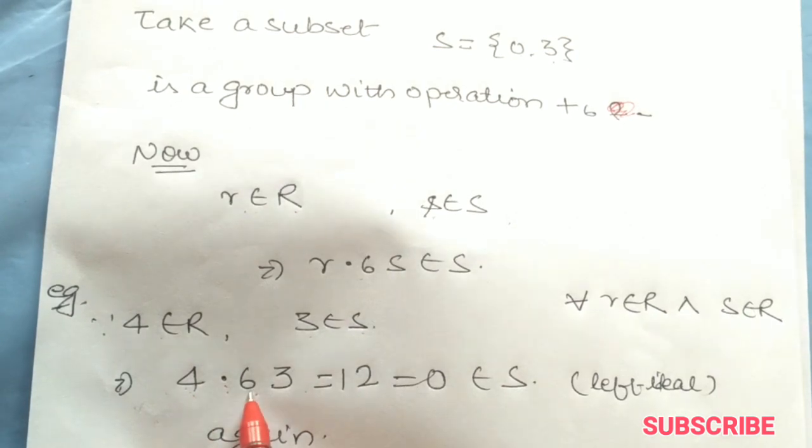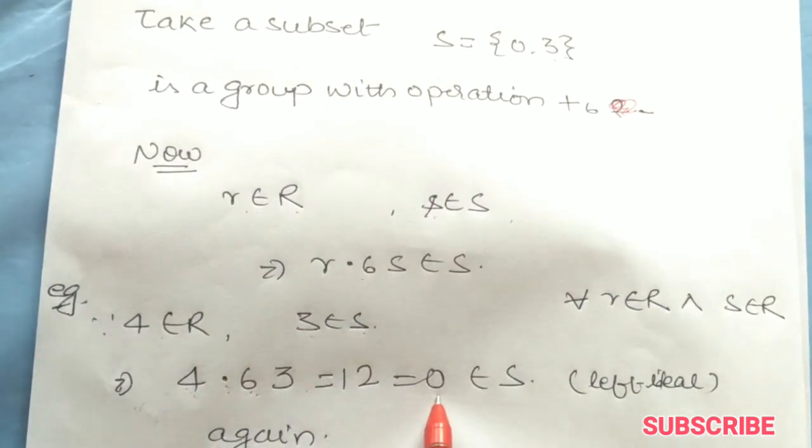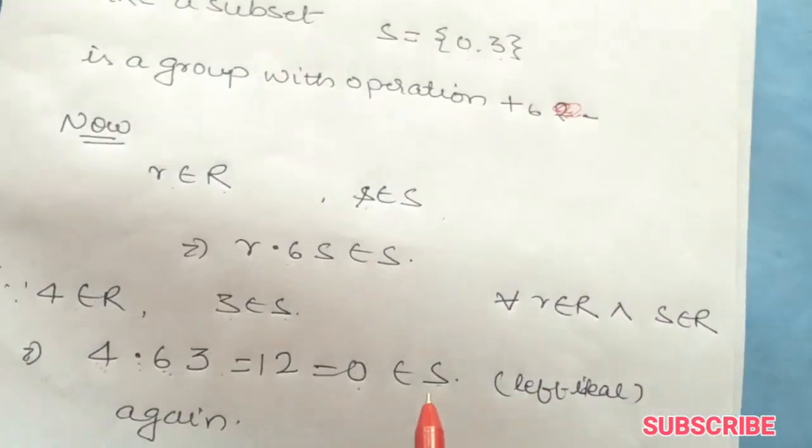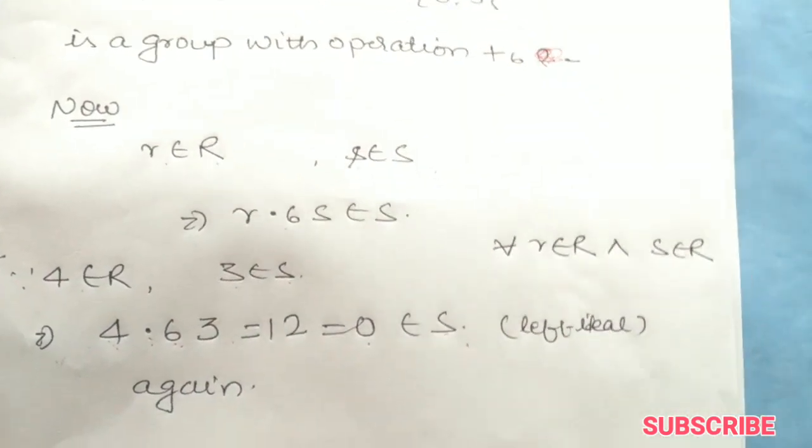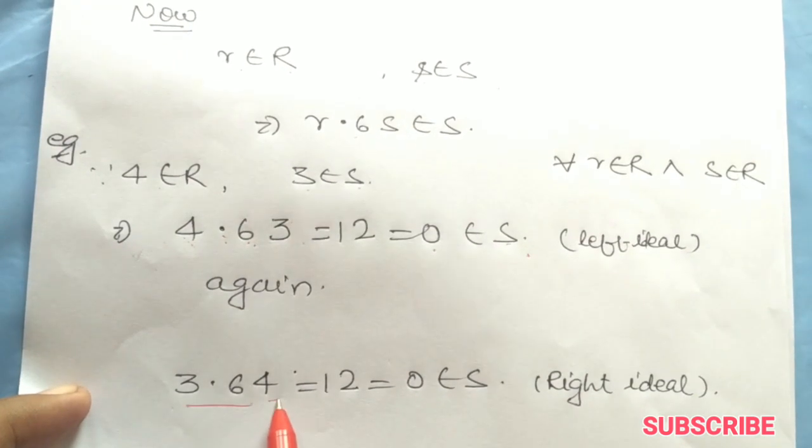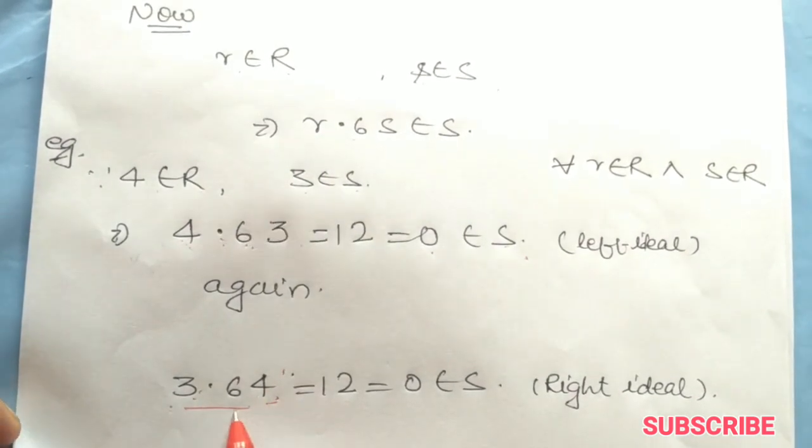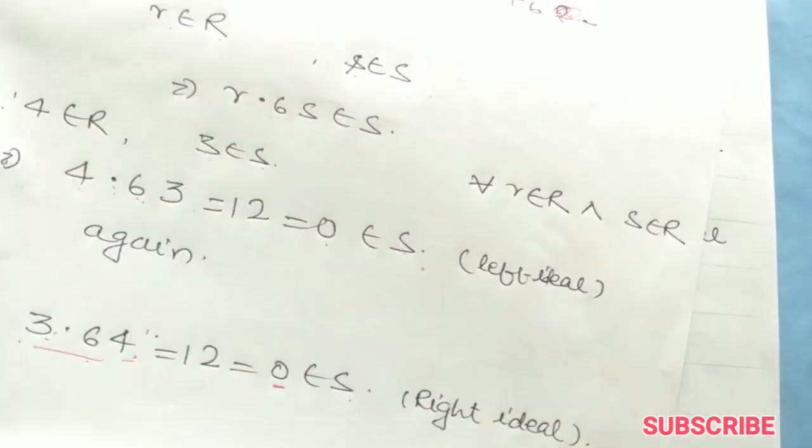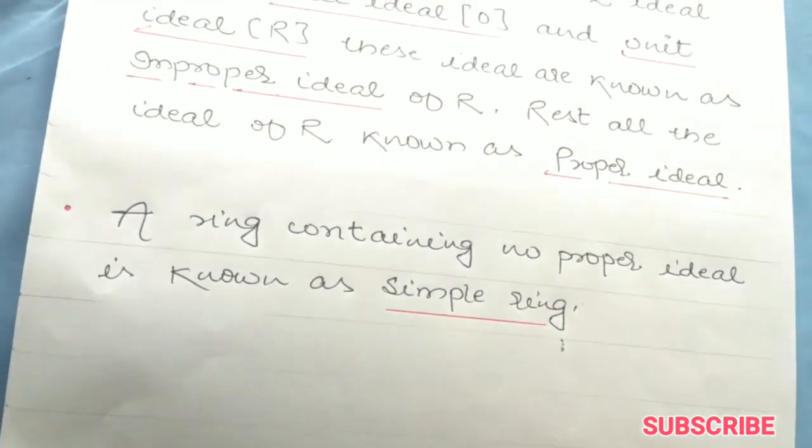Now I will say if r is in R and s is in S, then rs is in S. If we have to prove ideal, you will show both left and right. For example, 3 times 4 is 12. We divide to get remainder 0, which belongs to S. Similarly, we can do right ideal. So this will be an example of an ideal.